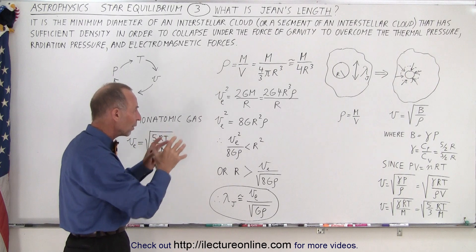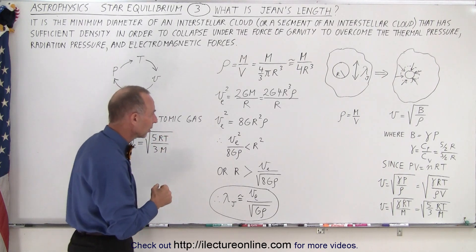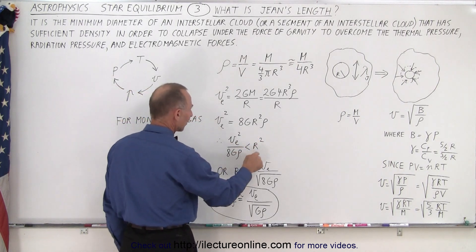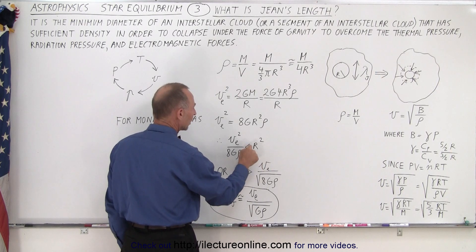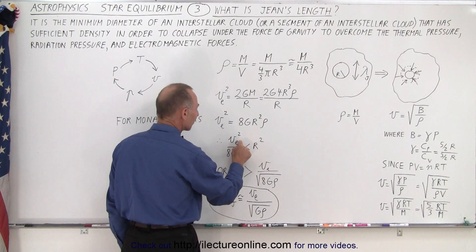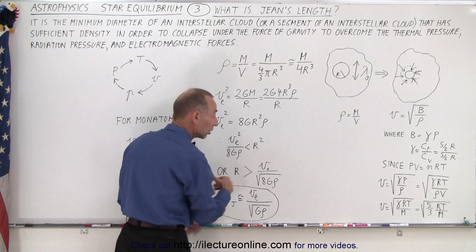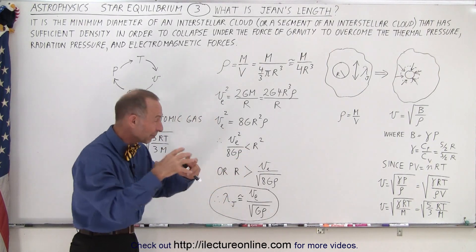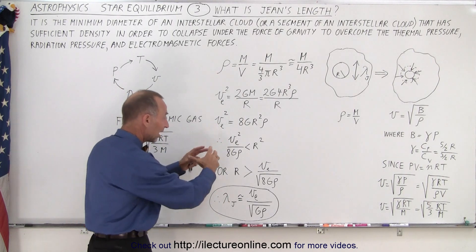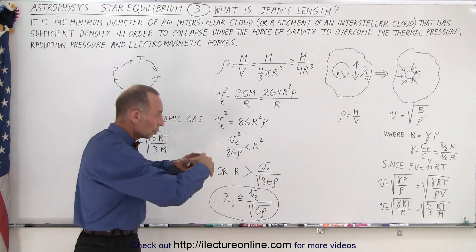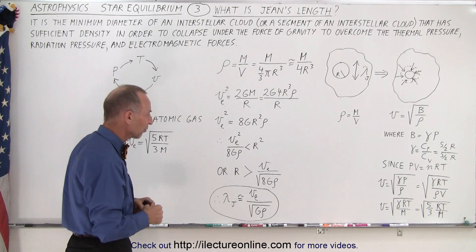So now if we solve that equation for r, the radius, notice that we then have r squared must now be larger than the escape velocity squared divided by 8 times the gravitational constant times the density. Why do we say larger than? Because that's now the minimum size required, so this size or bigger presumably will cause that segment of the cloud to collapse.